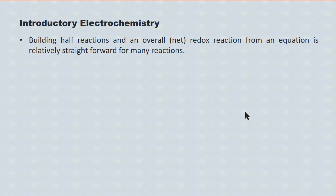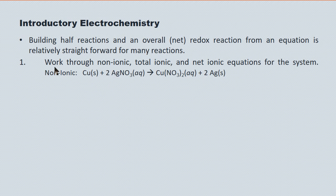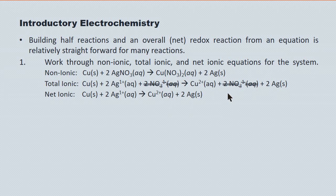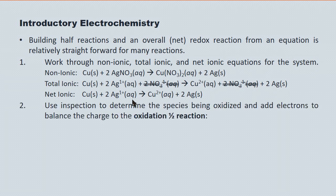Building a half reaction and then an overall redox reaction from an equation is relatively straightforward. Here's the same example using the non-ionic, total ionic, net ionic process learned in grade 11 rather than the half-reaction method. Anything in ionic form is shown as free ions. Then we cancel out the spectators — the nitrate ion, NO₃⁻, goes in and comes out chemically unchanged, so it's our spectator. Canceling it from both sides leaves us with our net ionic equation, which corresponds to our redox equation.